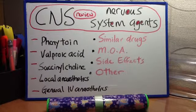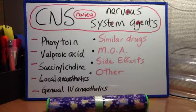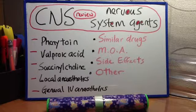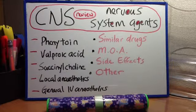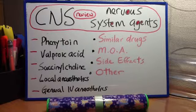Next: phenytoin. MOA: decreases the flow of sodium and calcium ions. Clinical uses: partial seizures, grand mal seizures, and status epilepticus. Side effects: nystagmus, double vision, gait instability, gingival hyperplasia, drug-induced lupus, and fetal hydantoin syndrome. Other: induces cytochrome P450, thereby leading to increased metabolism of several drugs, e.g., oral contraceptives, warfarin, and cyclosporine.